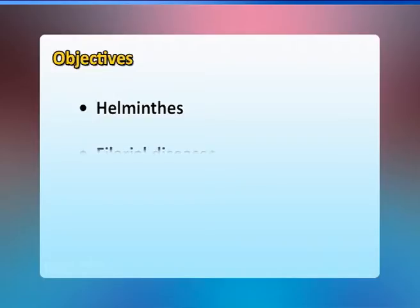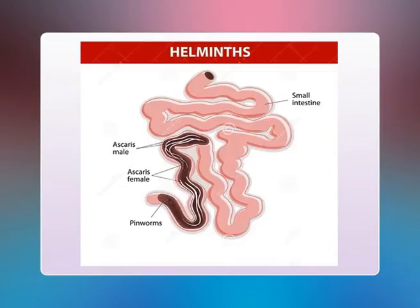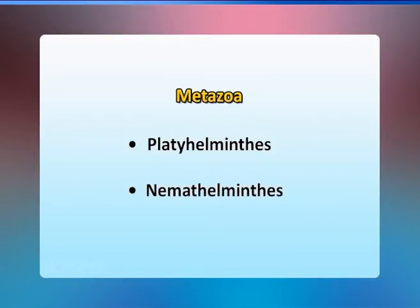Hello friends, today we will talk about helminthic disease which includes filarial and fungal disease, candida infection, and mycetoma. The main objectives of today's deliberation are: introduction about helminths, to study about filarial diseases, to know about candida infection, and to gain knowledge about mycetoma. These are metazoa and are classified into two phylums: platyhelminthes and nematohelminthes.